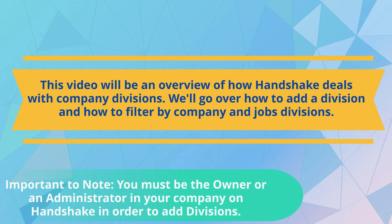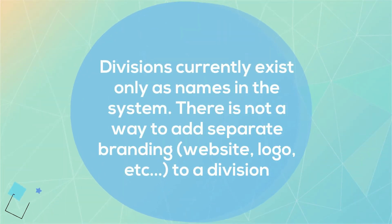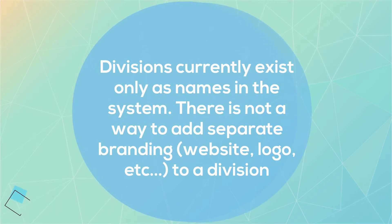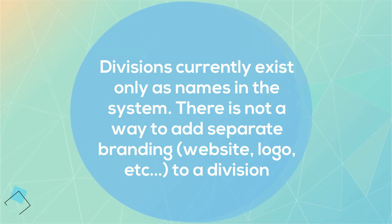Important to note: you must be the owner or administrator of your company on Handshake in order to add divisions. Divisions currently exist only as names in the system — there is no way to add separate branding such as websites or logos to a division.